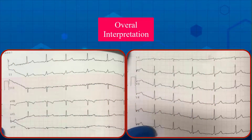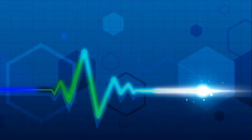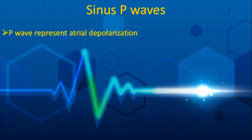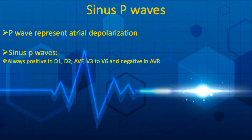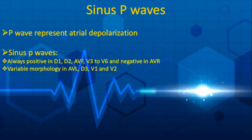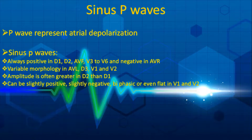To interpret every EKG strip properly, make a list of abnormal findings. In this strip, the abnormal finding is ectopic atrial rhythm. The hallmark of every ectopic atrial rhythm is the presence of non-sinus P waves. It is essential to know normal variations of sinus P waves. A P wave is the first wave of the electrocardiogram, representing depolarization of the biatrial chamber. Sinus P waves are always positive in D1, D2, AVF, V3 to V6, and negative in AVR. They have variable morphology in AVL, D3, V1, and V2. The amplitude of the sinus P wave is often greater in D2 compared to D1. Sinus P waves can be slightly positive, slightly negative, biphasic, or even flat in V1 and V2.